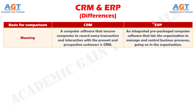Difference number 1. CRM is defined as software that lets the organization trace every transaction with the clients and customers, whereas ERP refers to a software program that helps the company manage its business processes going on across the company.